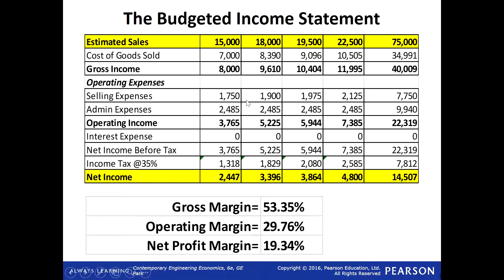So now we can prepare our budgeted income statement: sales minus cost of goods sold gives gross income or gross profit, minus operating expenses — selling expense from the selling budget and admin expense from the admin budget — gives operating income. There is no interest expense, so net income before tax is $3,765. Tax is 35% in this example, so 35% of that gives the tax amount. Net income after tax is $2,417 for the first quarter, and similarly for all quarters. This is our annual income statement.